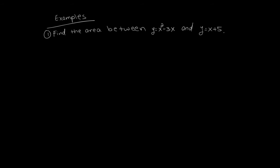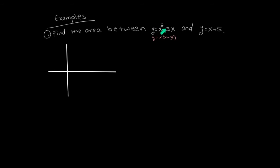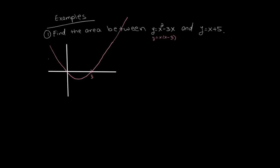We're going to find the area between x squared minus 3x and y equals x plus 5. The problem doesn't say what the x values are — let's continue and see what happens. The graph of x squared minus 3x is clearly a parabola. Factoring it as x times (x minus 3), we see it hits the x-axis at x equals 0 and x equals 3. Now let's draw y equals x plus 5 — a line with slope 1 and y-intercept 5.